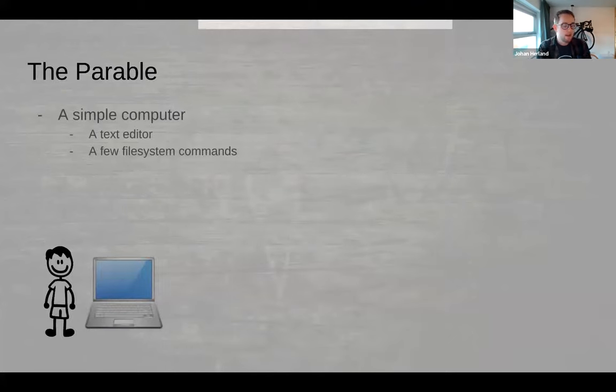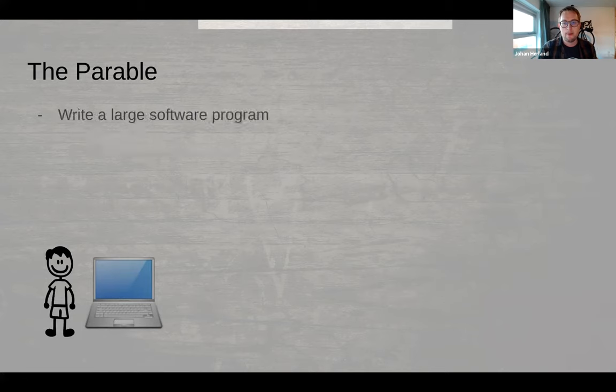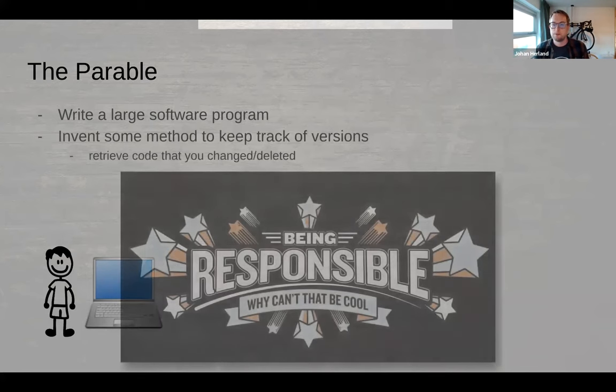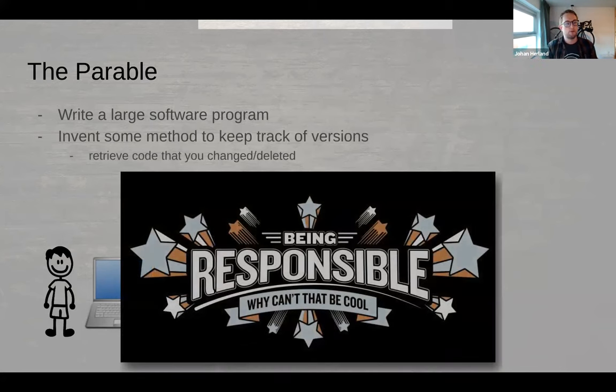So let's start. Imagine that you have a simple computer with absolutely nothing on it but a text editor and some simple file system commands. And you've decided to write a large software program on the system. But you're a responsible software developer, so you want to keep track of your versions, so that you can retrieve code that you've previously changed or deleted. And what follows here is a story about how you might design this version control system and the reasoning behind those design choices.